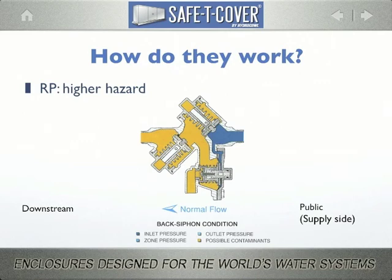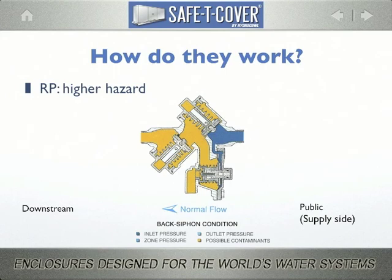Now consider a full failure of the number 2 check valve — you have water flowing through the relief valve at head pressure. If this is a large or multi-story building, that's a lot of water very fast. Finally, consider a failure of both check valves. In that event, water will flow at a pressure higher than the supplied pressure, because you have to add the head pressure to the supplied pressure, and this water will flow until those valves are manually closed.